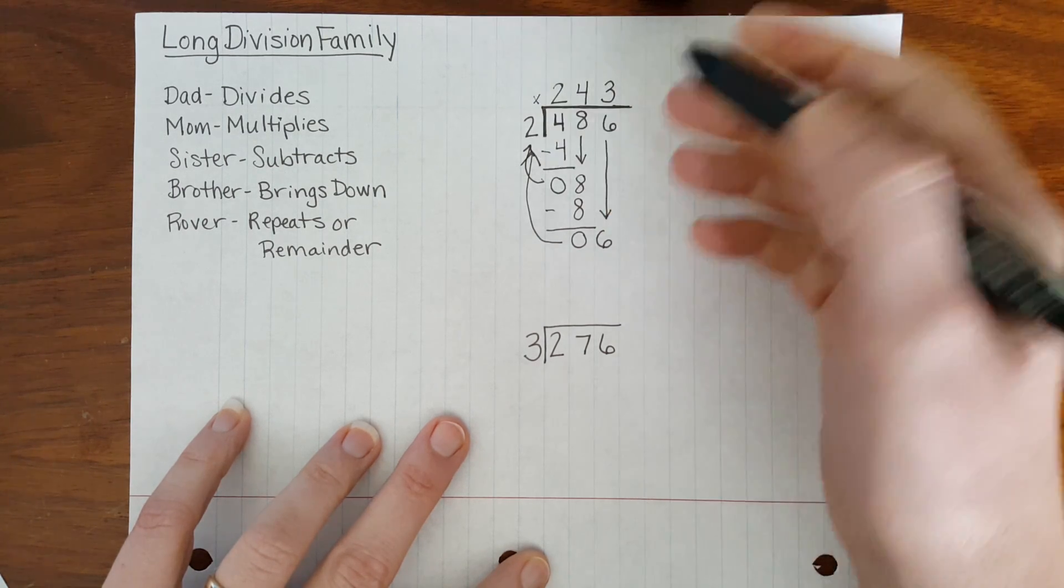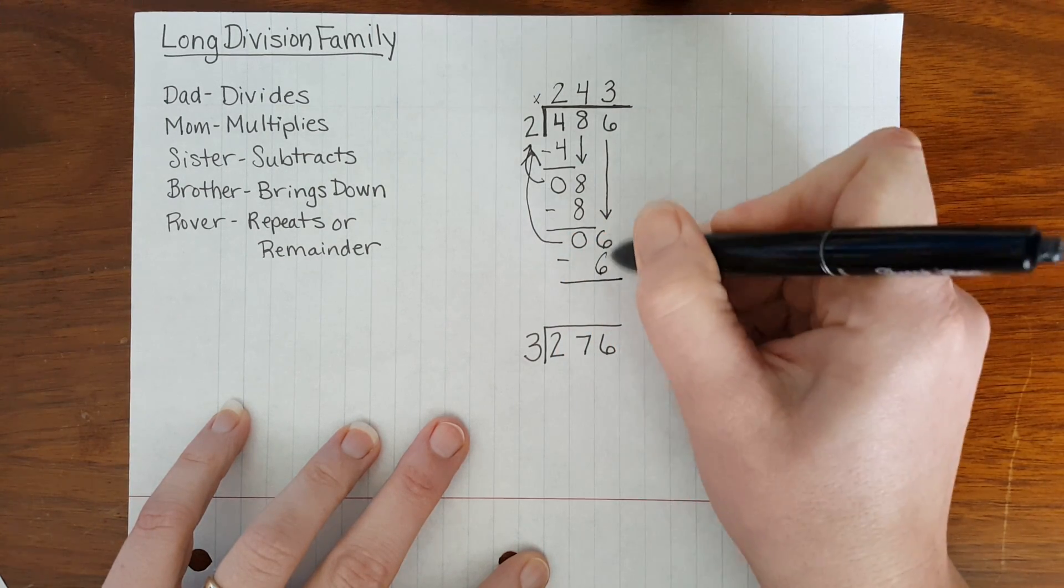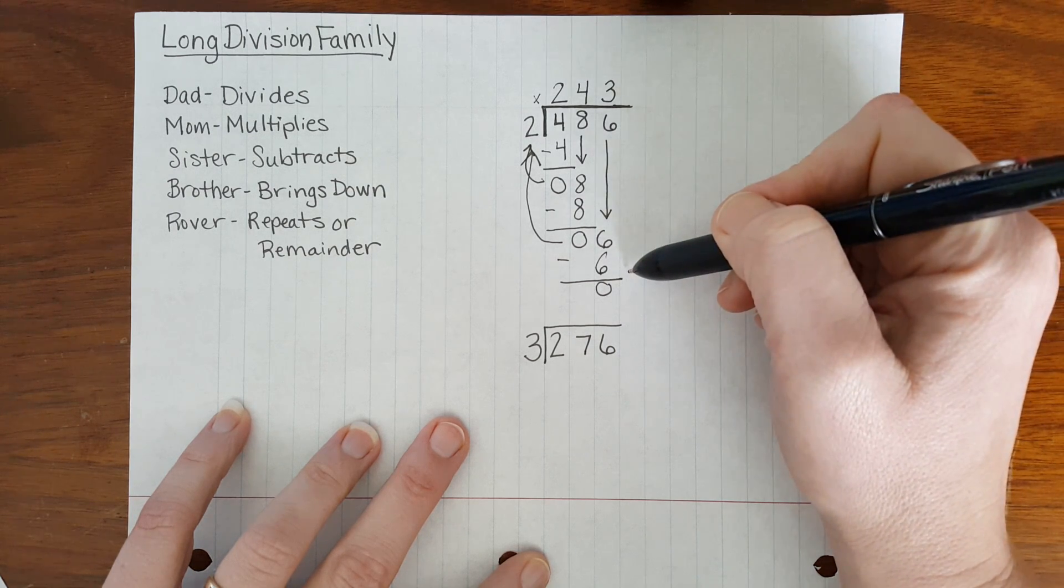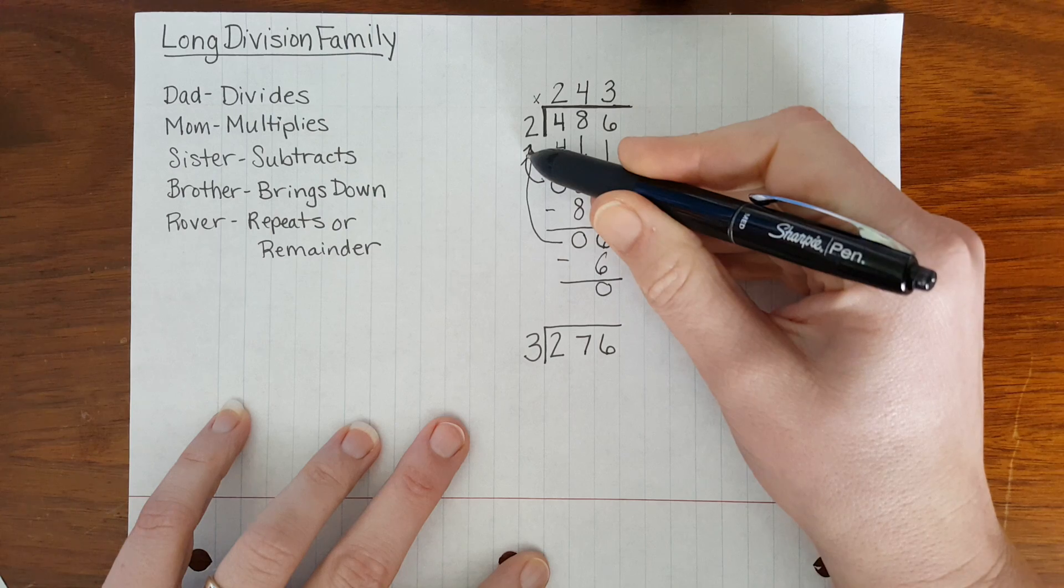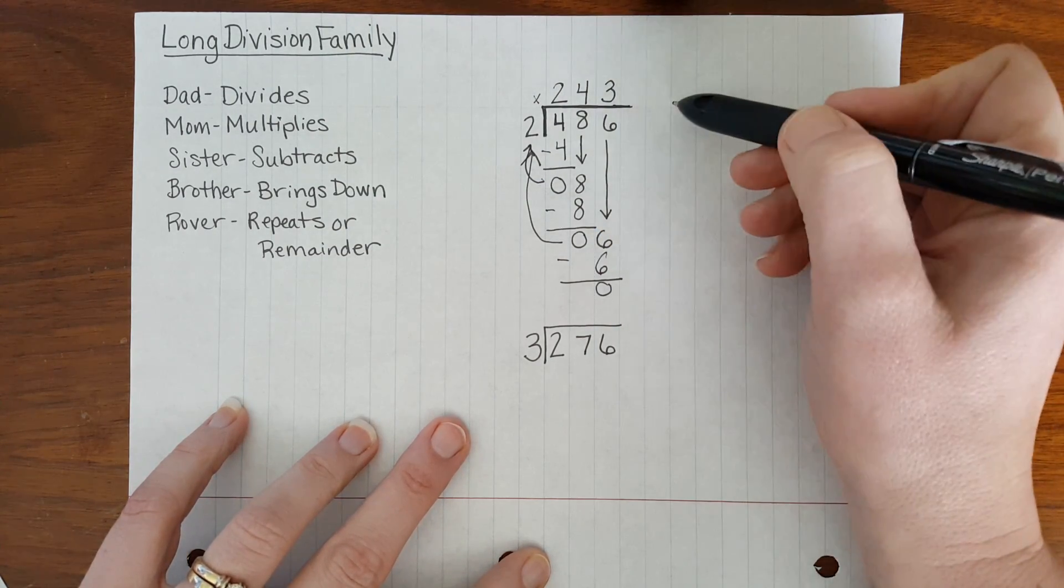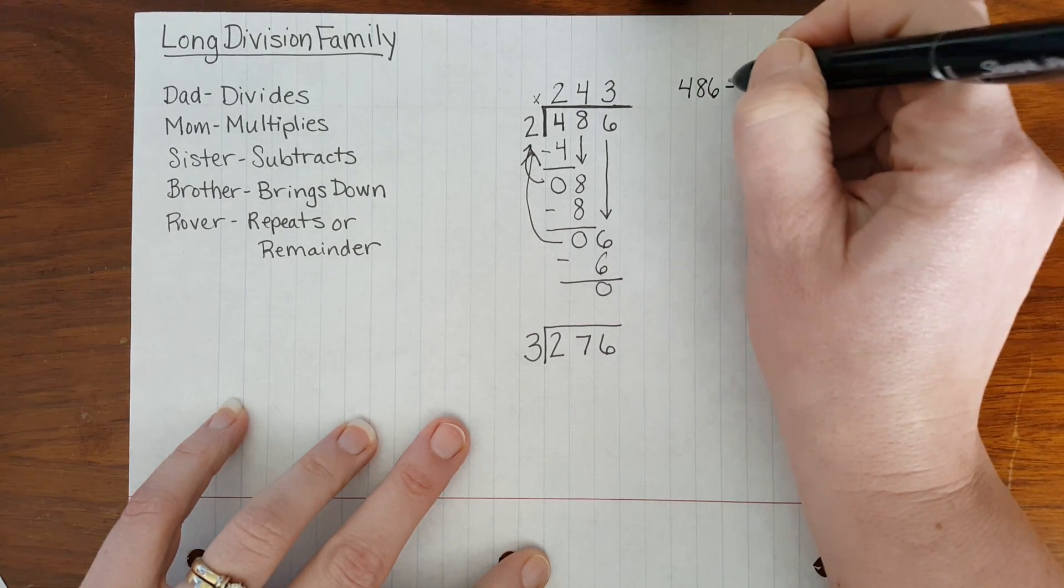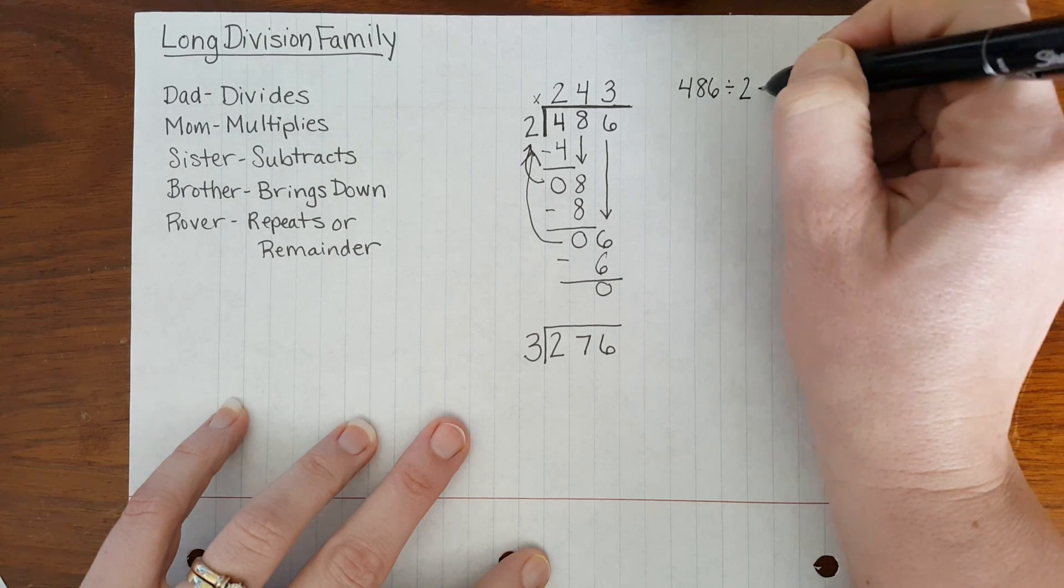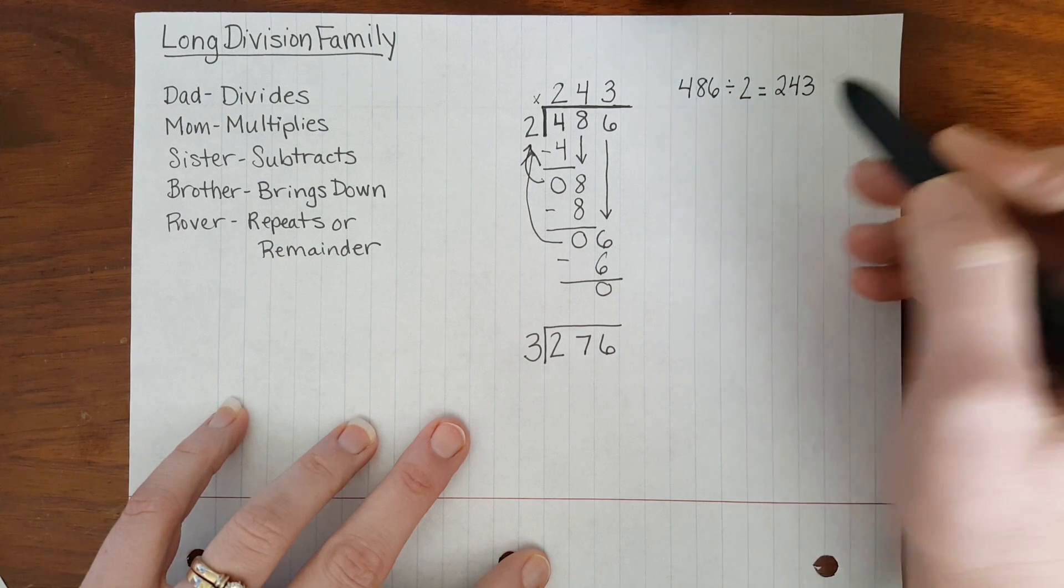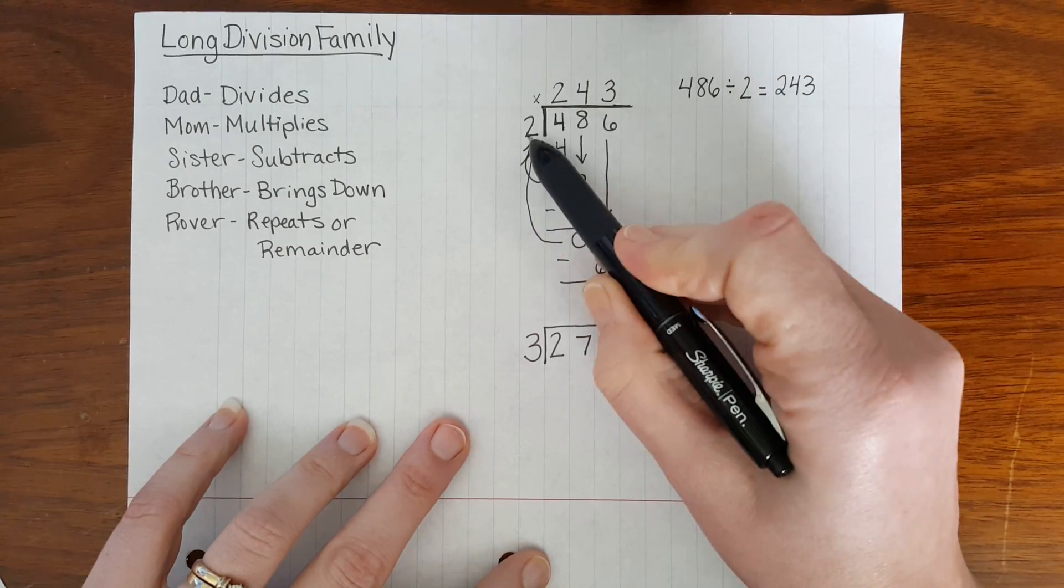3 times 2 equals 6. Sister subtracts. 6 take away 6 is 0. And there is nothing for brother to bring down. So Rover does not need to repeat. There is a 0, which Rover says there is no remainder. Therefore, 486 divided by 2 equals 243. 243 is the quotient or answer to our long division problem.